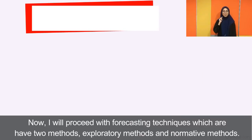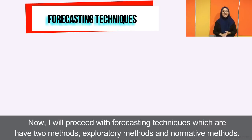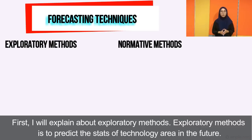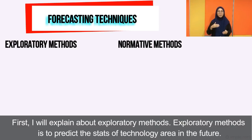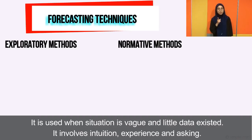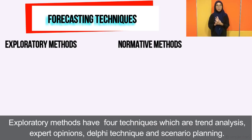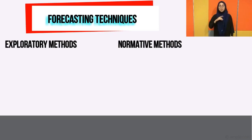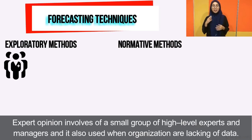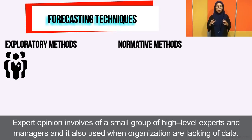Now we proceed with forecasting techniques, which have two methods: exploratory method and normative method. The exploratory method is used to predict the state of technology areas in the future. It is used when the situation is vague and little data exists. It involves intuition, exploration, and inquiry. Exploratory method has four techniques: trend analysis, expert opinion, adaptive technique, and scenario planning. It involves a small group of high-level experts and managers and is used when organizations are lacking data.